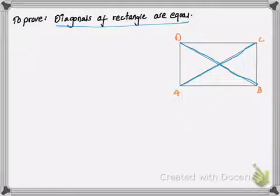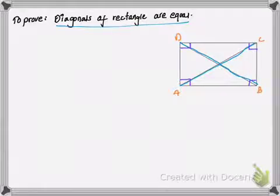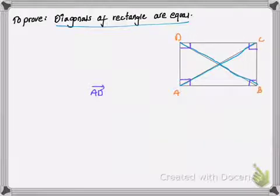Since ABCD is the rectangle we've taken, we know that all angles — or corners — of the rectangle are equal to 90 degrees. Also, the opposite sides of the rectangle are equal. The magnitude of opposite sides are equal and parallel as well, so vector AD is the same as vector BC.